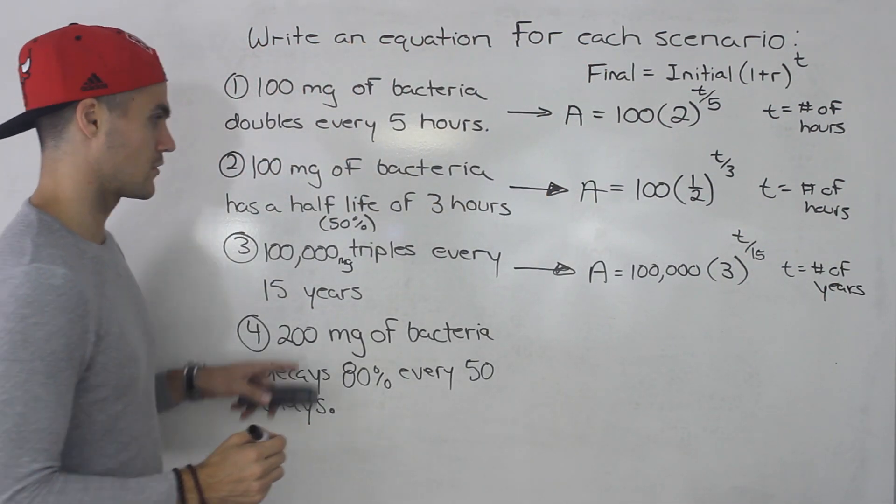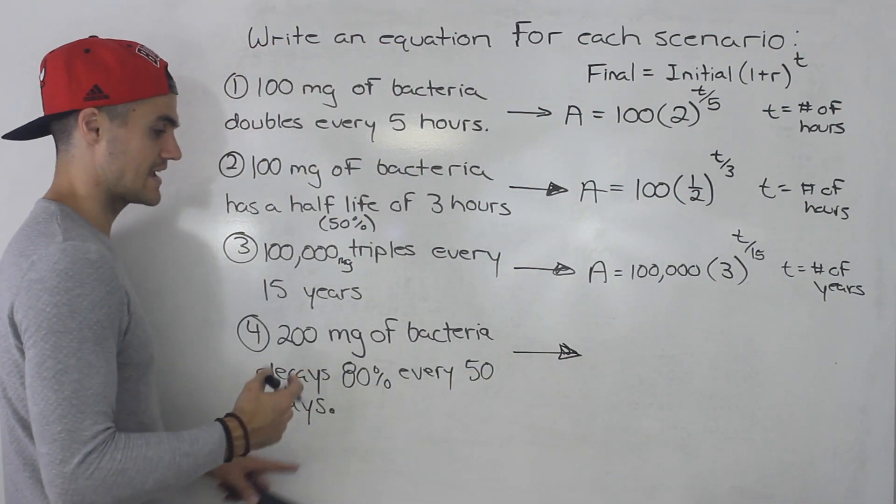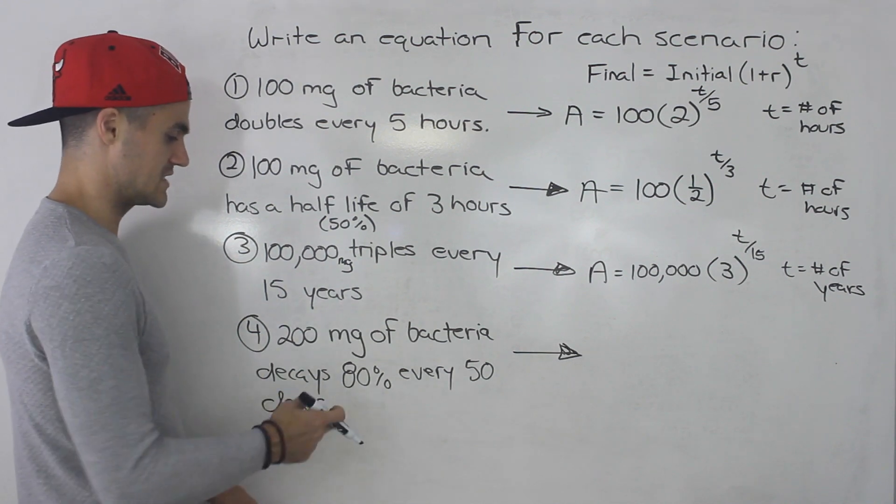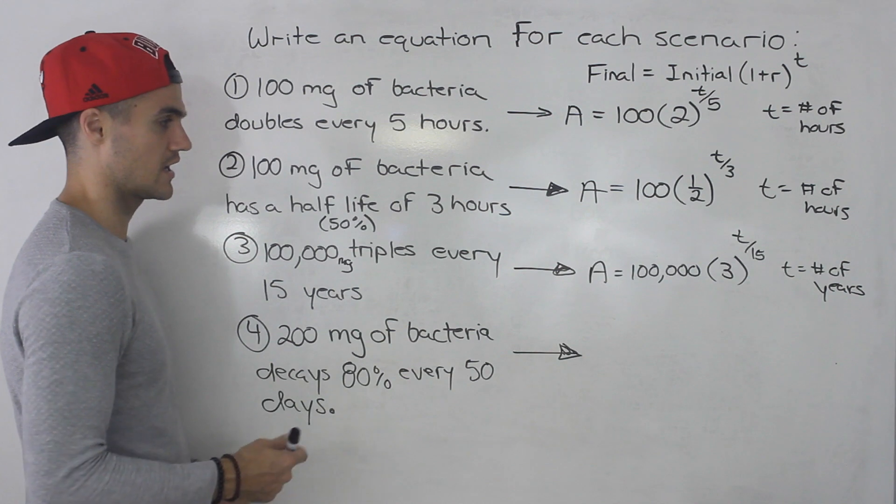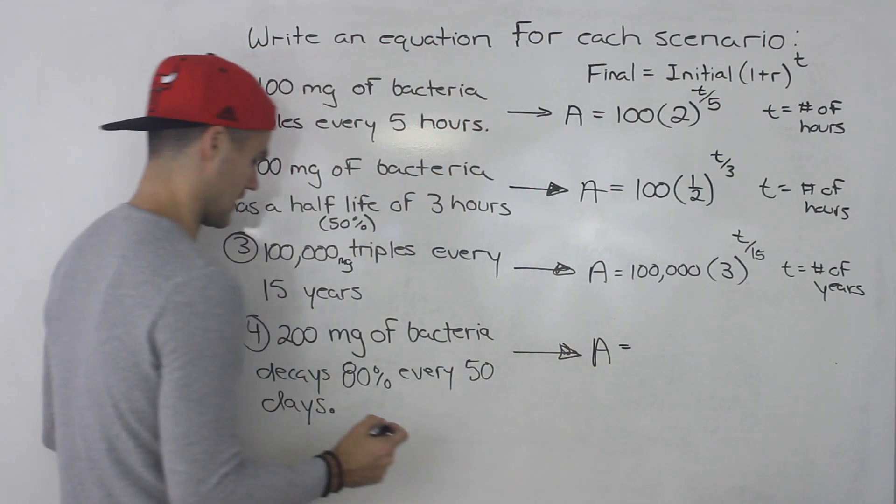All right. And then number four, we got 200 milligrams of bacteria decays 80% every 50 days. So decays 80%, loses 80% of its value every 50 days. So we know A is going to be the initial value 200.